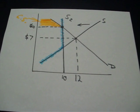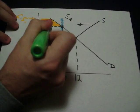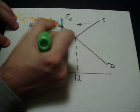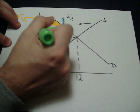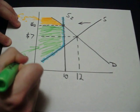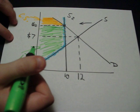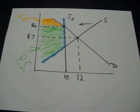Producer surplus would be this area down here. This green area that I'm shading in is your producer surplus. So it's just the area above the supply curve, but below the new equilibrium price.